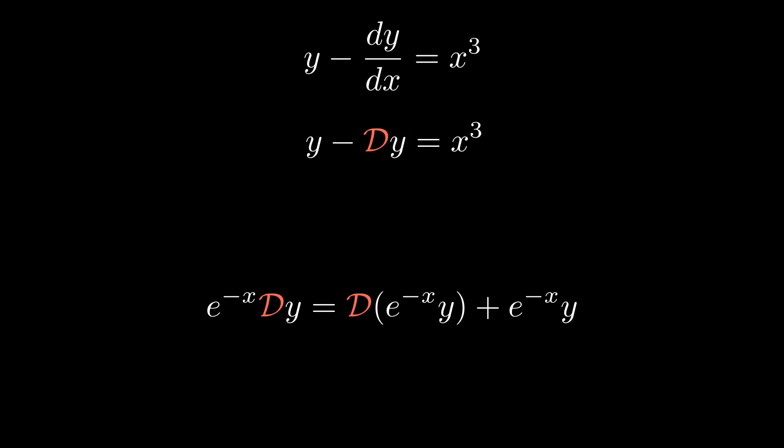Make e to the minus x Dy the subject. And we see that after multiplying through by e to the minus x, we can substitute this in up here. These two terms cancel out. And boom, we've transformed the operator into something we know how to invert.